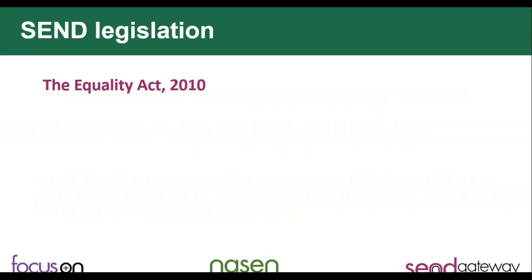So let's have a look at the SEND legislation. The first piece of legislation is one that you may well already be aware of — it's called the Equality Act, which was produced in 2010. Under the Equality Act, disability is what's called a protected characteristic. And the definition of disability is actually much broader than many people realise. Things like autism, dyslexia, ADHD are actually classed as disabilities under the Equality Act.